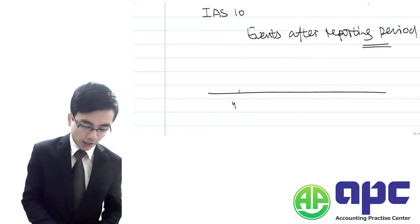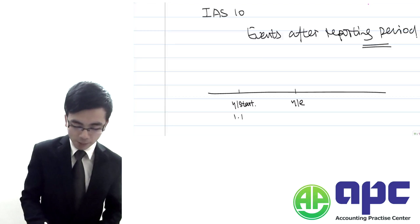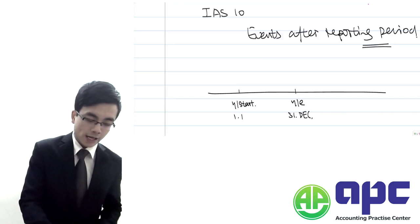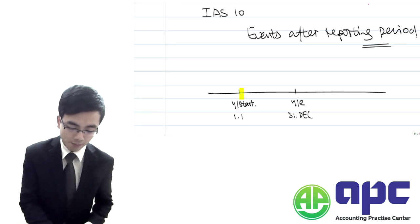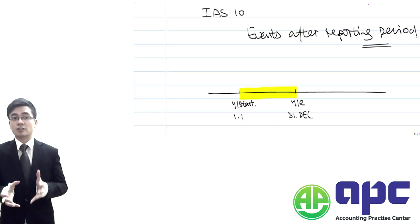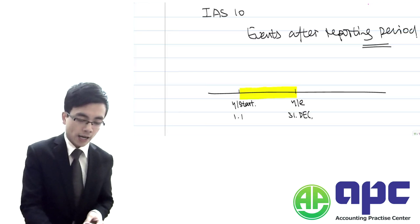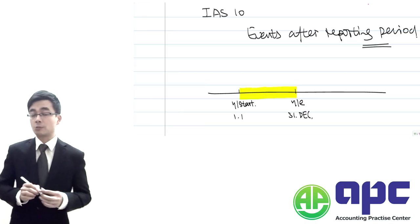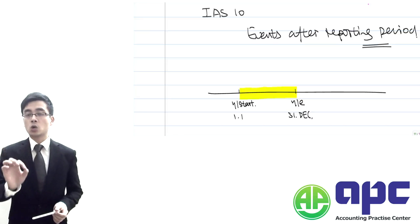We've got the year start — for example, the 1st of January — and we've got the year-end, for example, 31st December. Of course, the users of the financial statements will be caring about events happening during this period because it's for the current year.